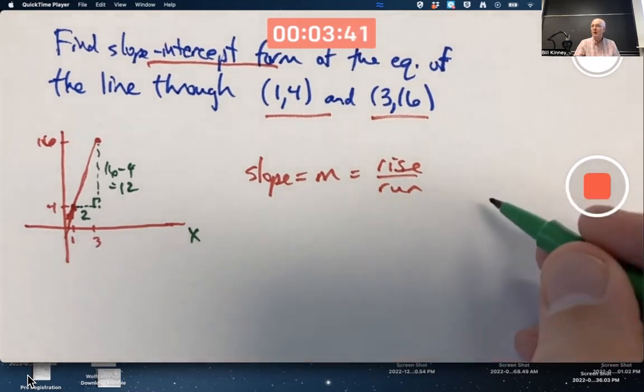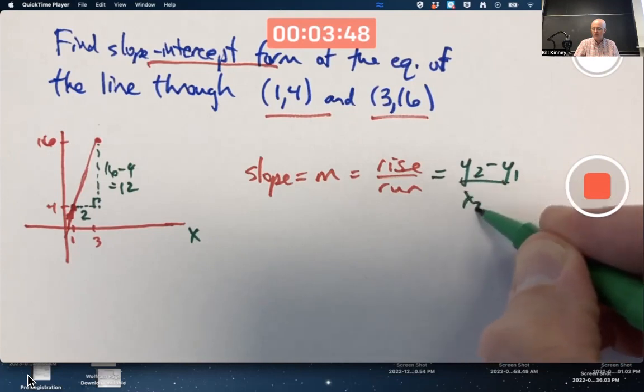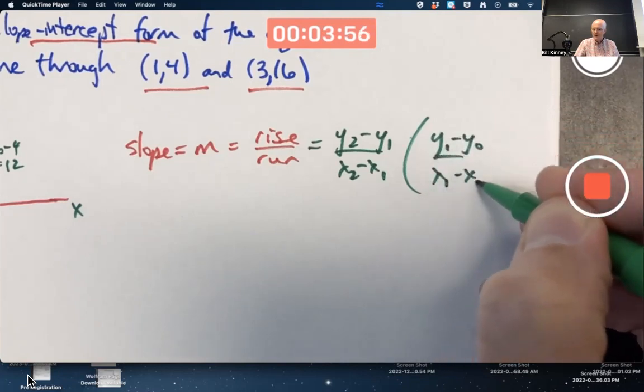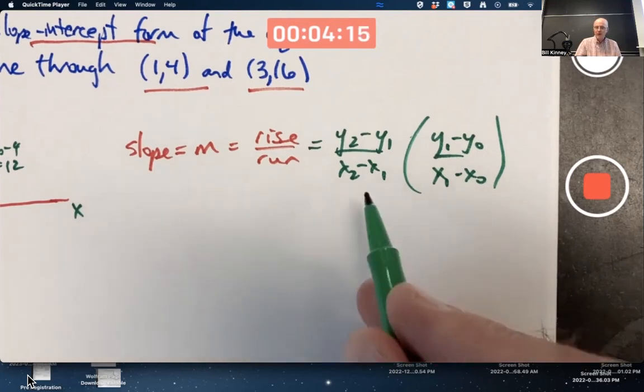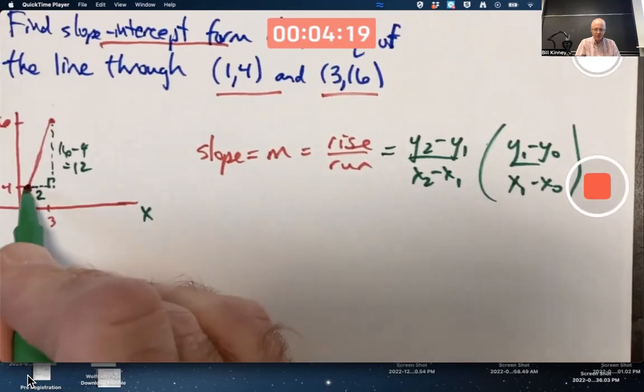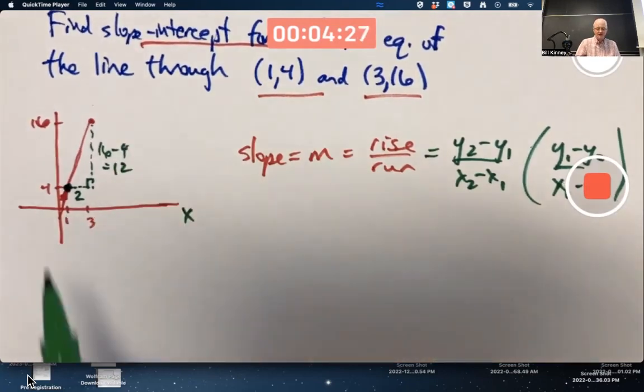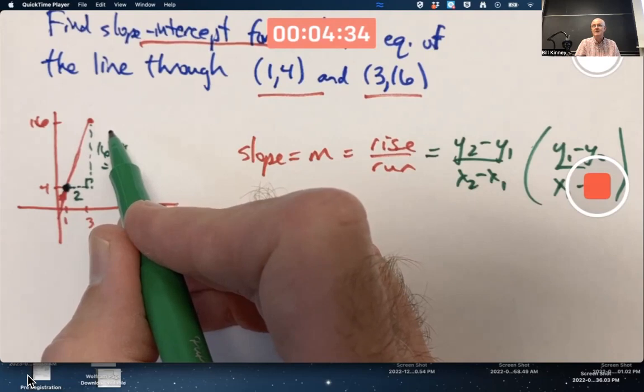You should feel comfortable writing other kinds of expressions for the slope. One common kind of expression is to write Y2 minus Y1 over X2 minus X1, or maybe Y1 minus Y0 over X1 minus X0. Which one's correct? It doesn't matter. It's the idea that's important. The particular notation used doesn't matter.